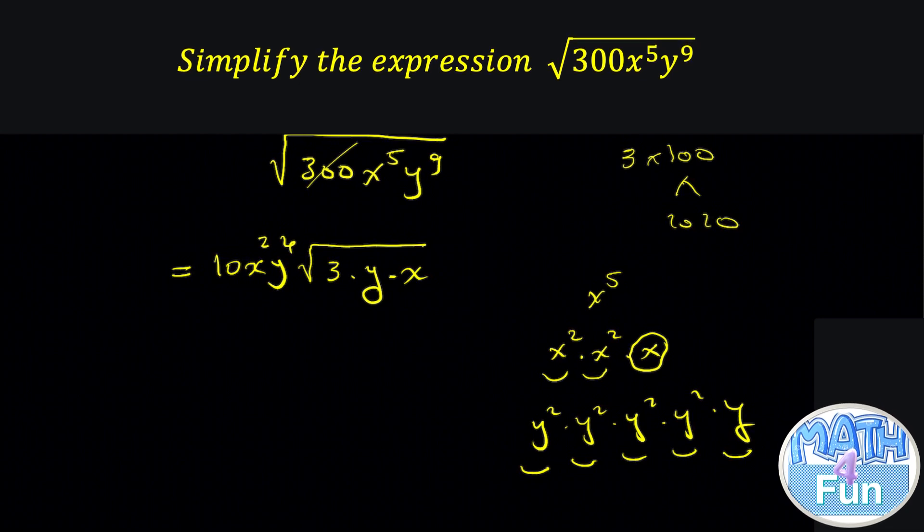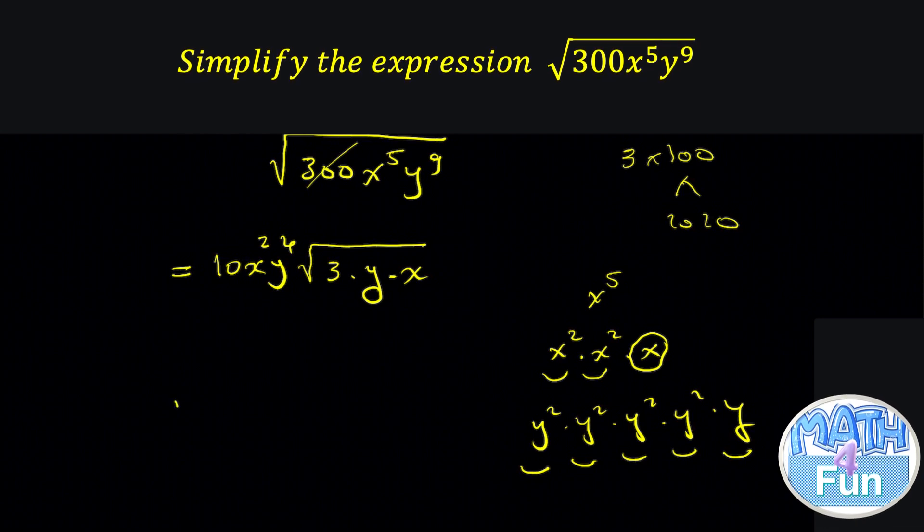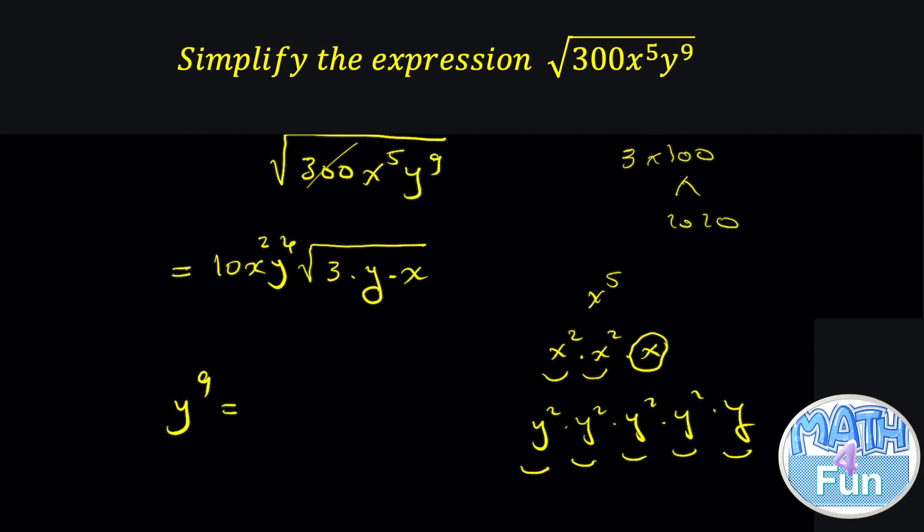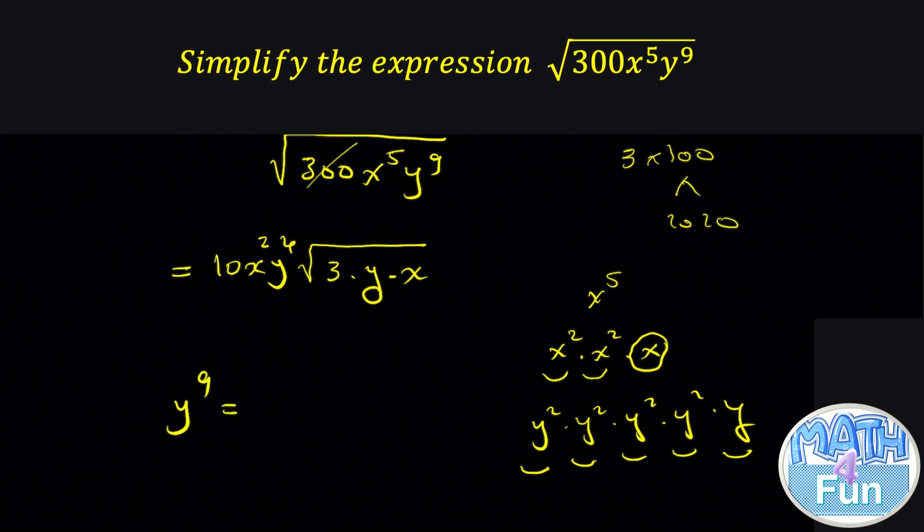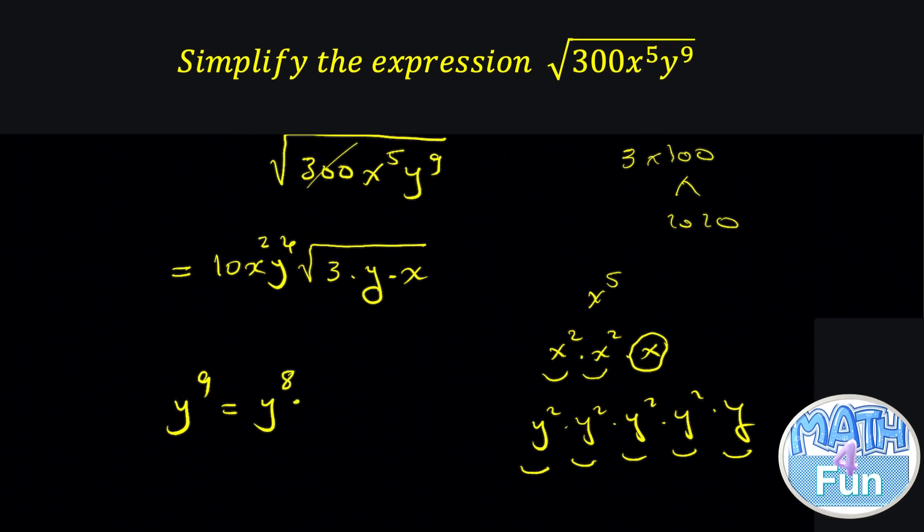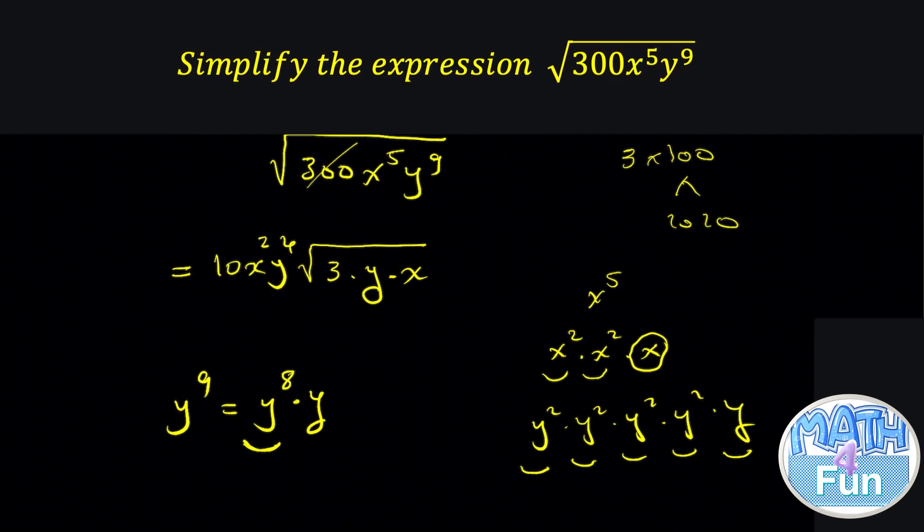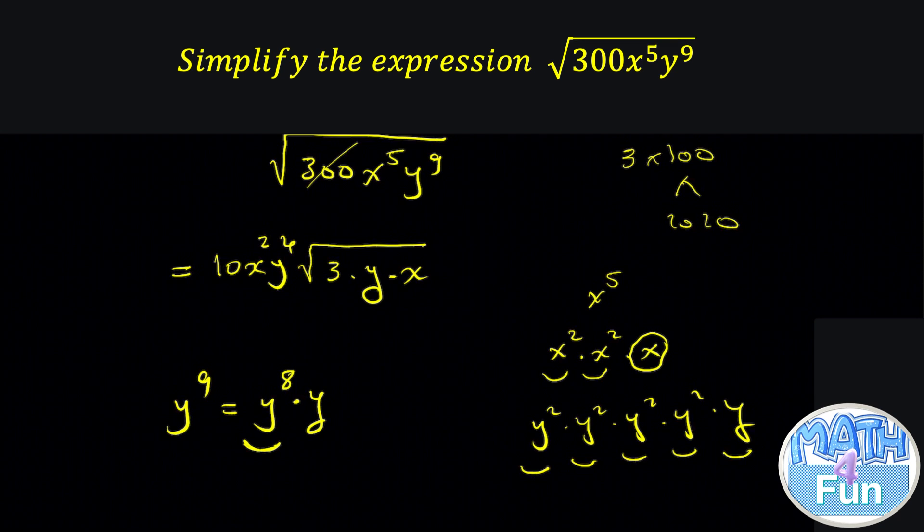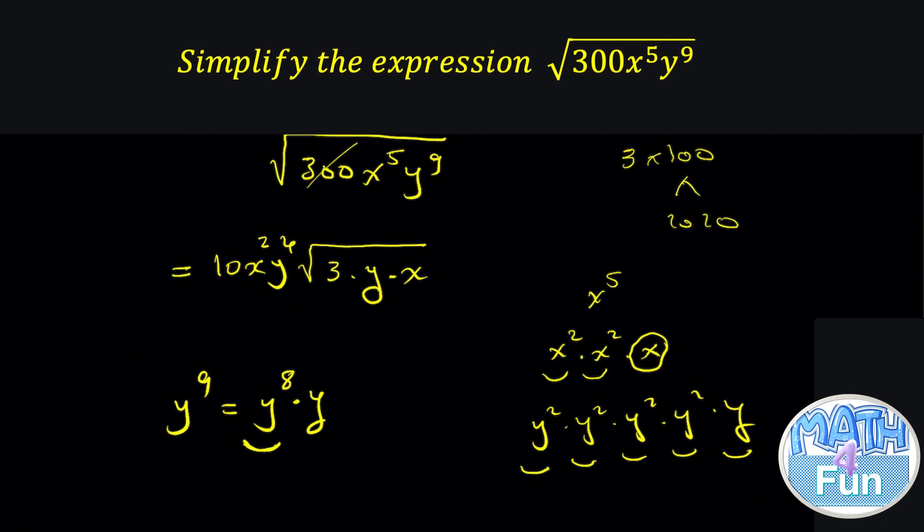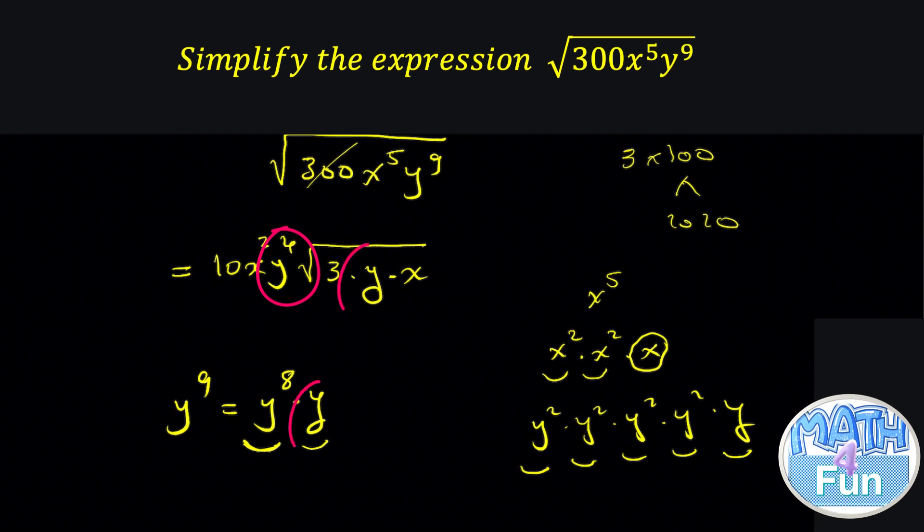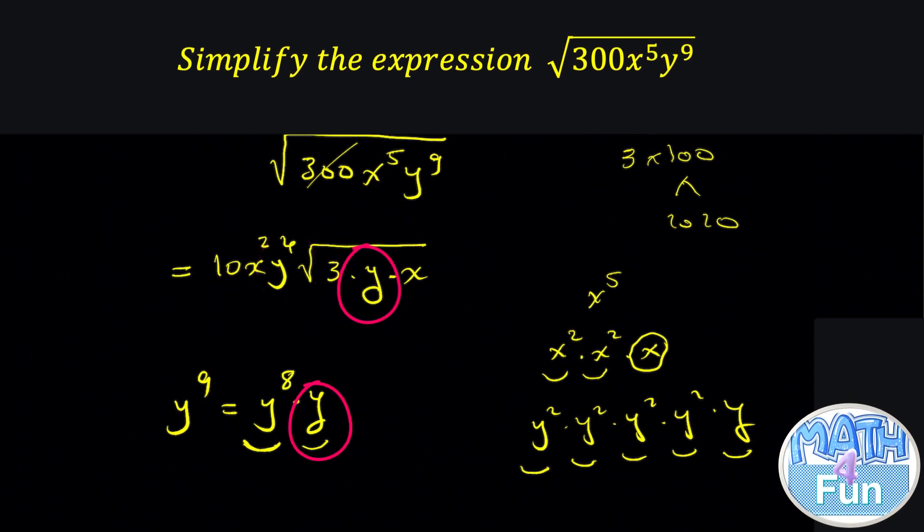Now if you want to do it faster than expanding the expression, so let's say y to the power 9, we can write it as. Look at the number which is closer to 9, but even. It is 8, so we can write it y to the power 8 times y. And this one, you can divide the power by 2 and make the variable outside. Like y to the power 8, divide 8 by 2, you get 4. So write y to the power 4 outside the radical and keep y inside the radical. This is easier in case you have big numbers.